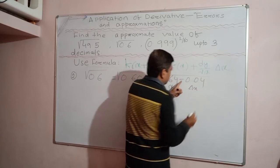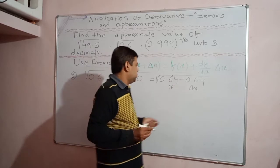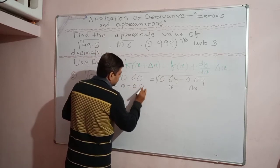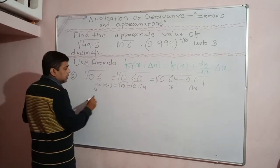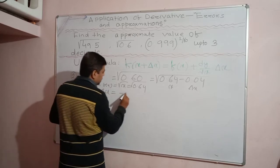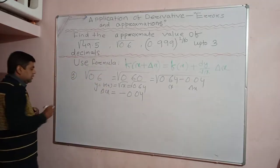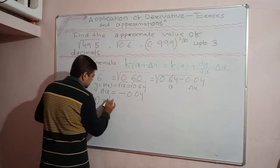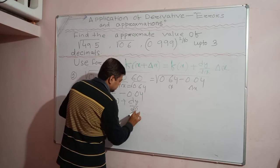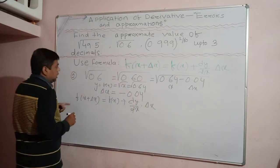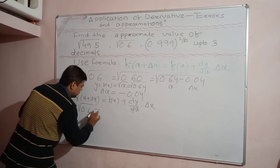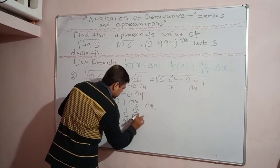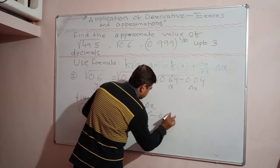Here f(x) = √x = √0.64 and Δx = −0.04. Applying the formula: f(x + Δx) = f(x) + (dy/dx)·Δx. So √0.6 = √0.64 + (d/dx)(√x)·(−0.04) = √0.64 + (1/(2√x))·(−0.04). Substituting x = 0.64: √0.64 = 0.8, giving 0.8 + (1/(2·0.8))·(−0.04).